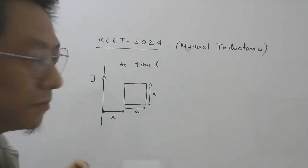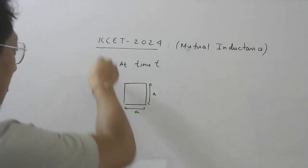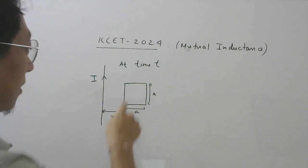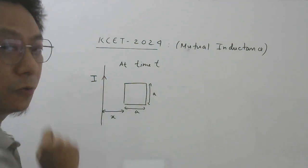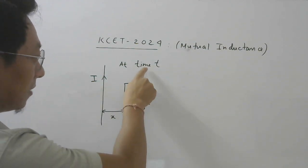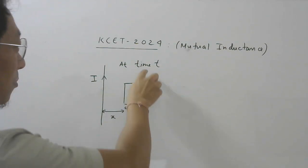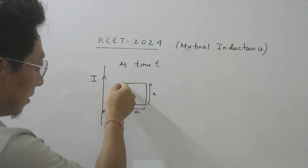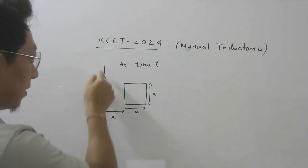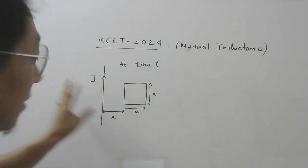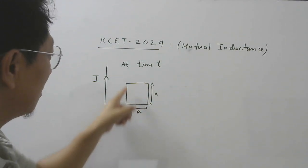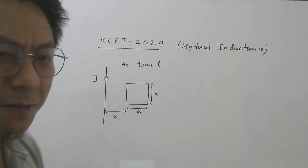Here is the diagram that explains the question. There is a straight infinitely long current-carrying conductor, and a square loop with side A. At any given instant, this part of the square loop is at distance X from the current-carrying conductor. How are we going to calculate the mutual inductance between this coil and this wire? Quite simple.